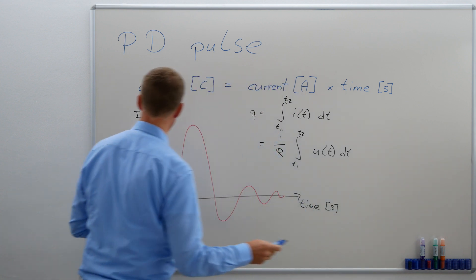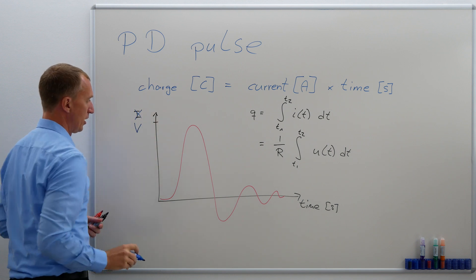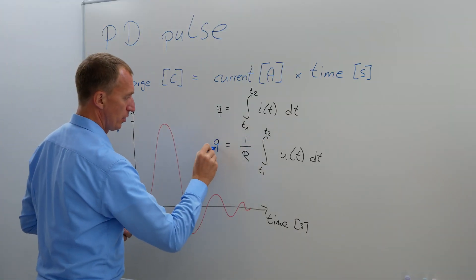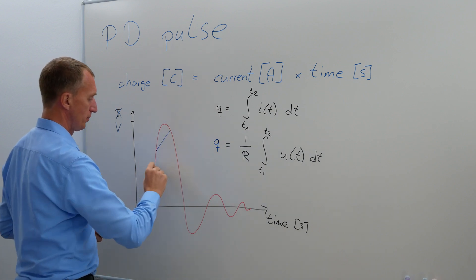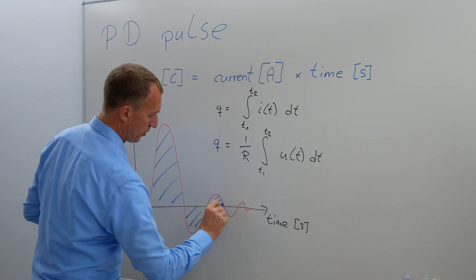And this brings us to the point where this is no longer current, but this is actually in voltage. And if we solve this equation, if we want to obtain our charge here, we have to do an integration, get the area below the curve.